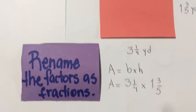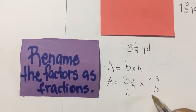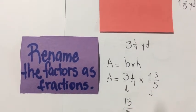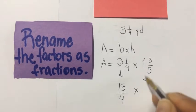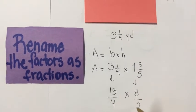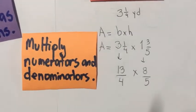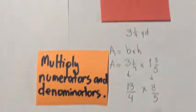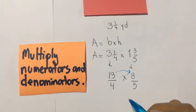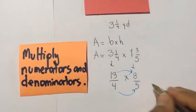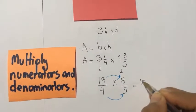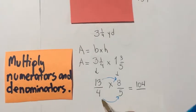Let's rename the mixed numbers. 3 times 4 is 12, plus 1 is 13 — so 13/4. For the second: 1 times 5 is 5, plus 3 is 8 — so 8/5. Now the second step: multiply numerator by numerator and denominator by denominator. 13 times 8 is 104. 4 times 5 is 20.